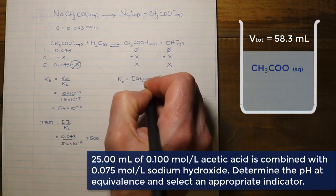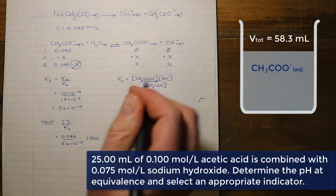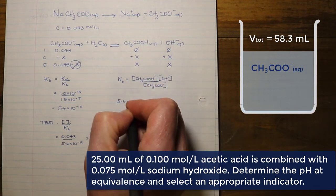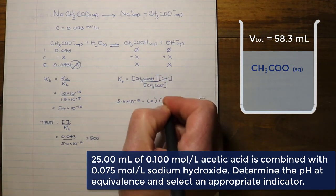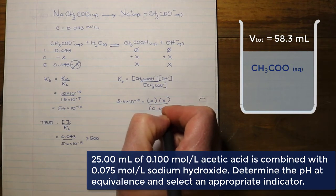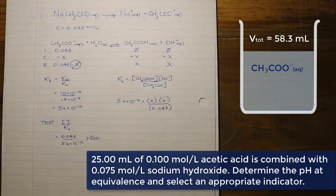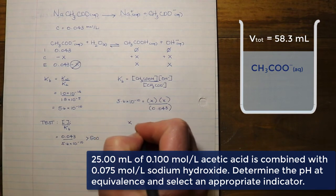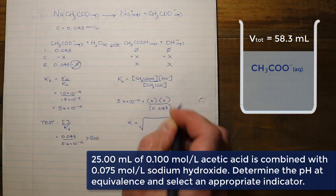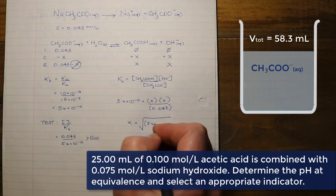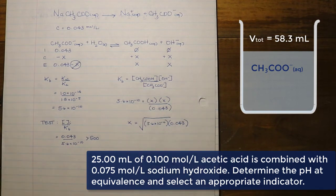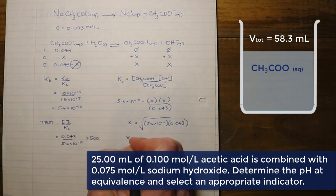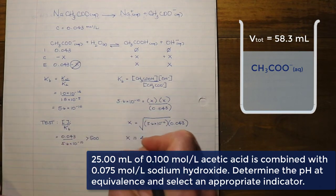We plug our equilibrium values into the equilibrium expression and simplify. Multiplying Kb by the initial concentration and then taking the square root — because X² appears on one side — we arrive at a value for X of 4.9 × 10⁻⁶.